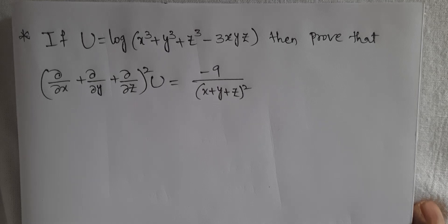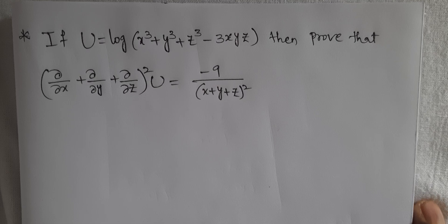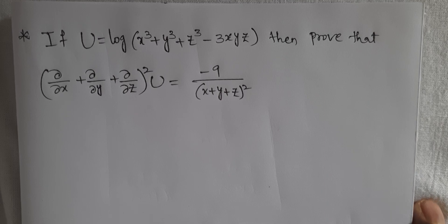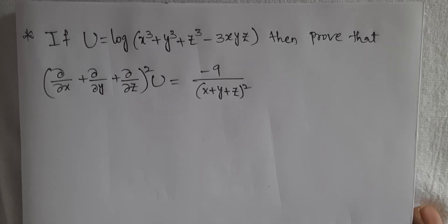See here: if u equals log of (x³ + y³ + z³ − 3xyz), then prove that (∂/∂x + ∂/∂y + ∂/∂z)² u equals −9 by (x + y + z)².